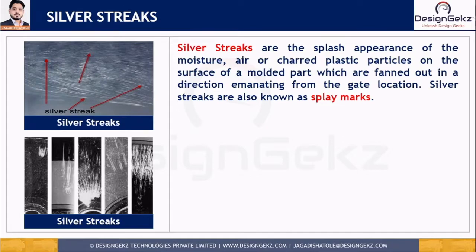You might have seen such splay marks or silver streaks on plastic spoons, plastic dishes, or transparent covers and sheets. Such streaks can also be observed on car headlights, but those mostly occur because of environmental conditions and are not considered a manufacturing defect — they are a result of post-processing environmental effects on the part.